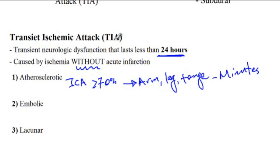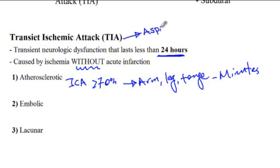TIAs must be taken seriously because they indicate that the patient is very likely to develop stroke in the future. That's why it's recommended to start lifestyle modifications, and if there are no contraindications, place the patient on aspirin.